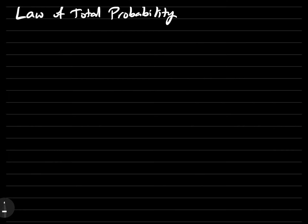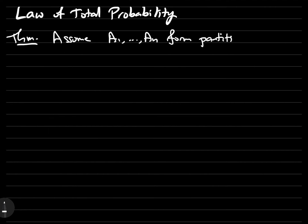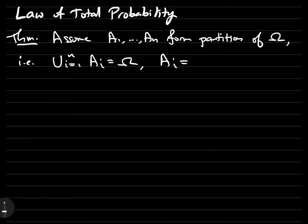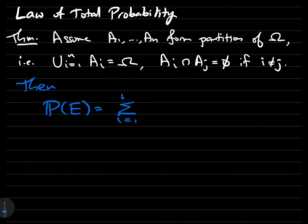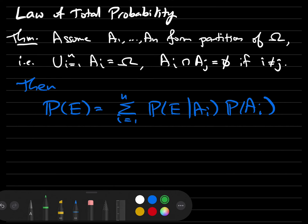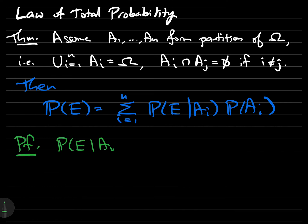Now we're ready to state the law of total probability. Let's assume that we have a partition of the sample space — specifically, sets A1 through AN such that their union is all of omega and they are pairwise disjoint. Then the probability of any event can be written as the following sum. To compute the total probability of an event, we compute all of the conditional probabilities against this partition, weighted by the probability of those elements in the partition.